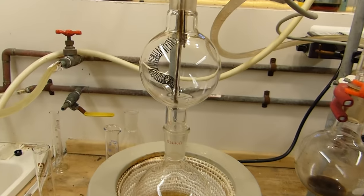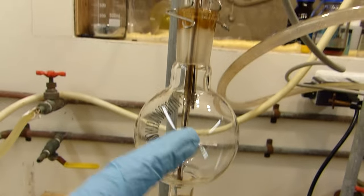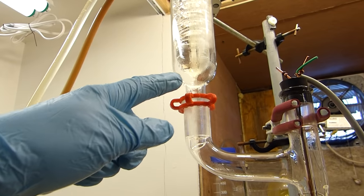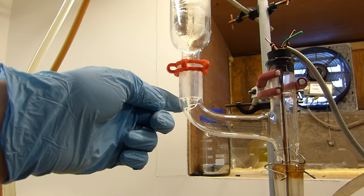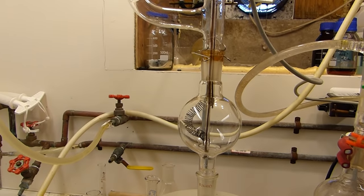The acetone is now refluxing happily. You can see it running down the walls of the flask here, and dripping from the reflux condenser. And that means that the generator is ready to go. All you need to do is turn on the filament.